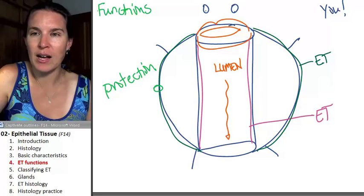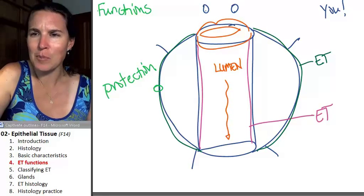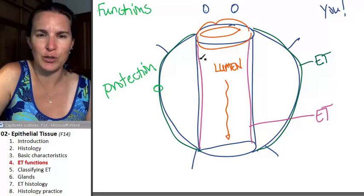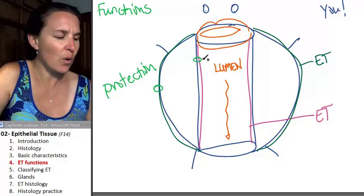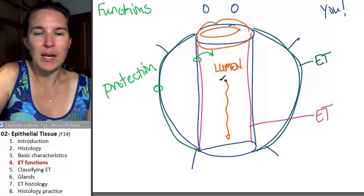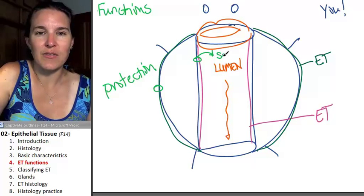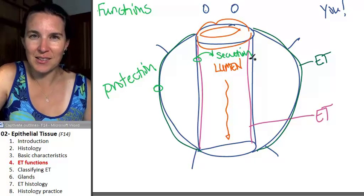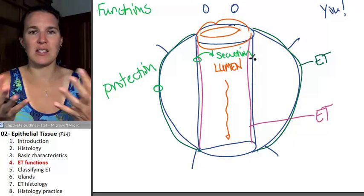All right. We also have a couple of functions that happen here. So, first of all, lubrication. Basically, we can secrete stuff. Epithelial cells make stuff.